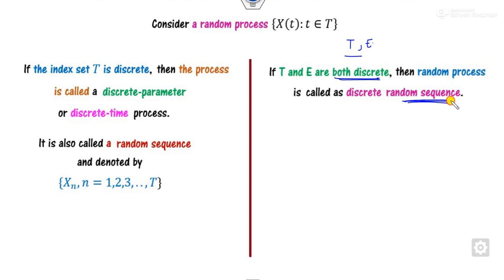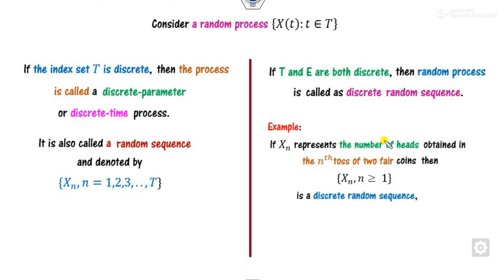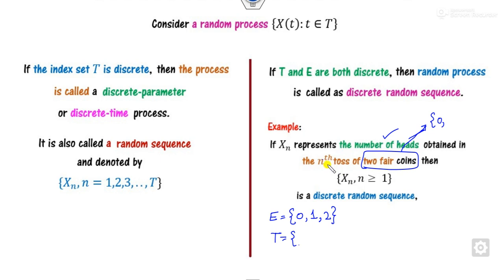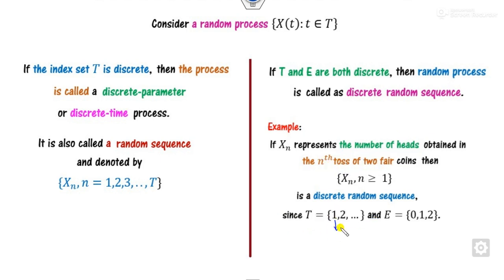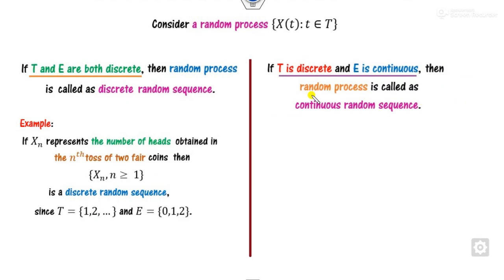If both T and the set of outcomes E are discrete, we call it a discrete random sequence. For example, consider the number of heads obtained in the nth toss of two fair coins. The outcomes are 0, 1, or 2 heads, and the time experiment is the toss number — first toss, second toss, up to infinite tosses. Since both the number of heads and the toss number are discrete, this is called the discrete random process.